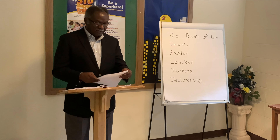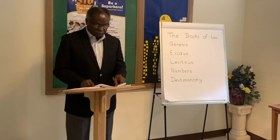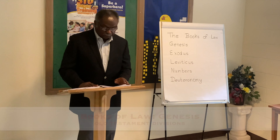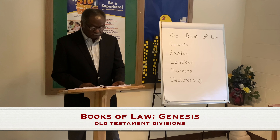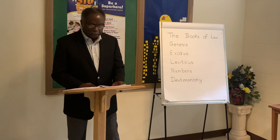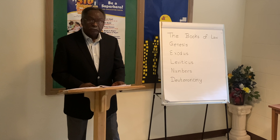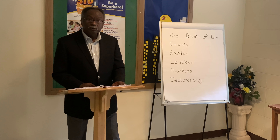Let's look at these five books of law. The first one is Genesis. Genesis is the only book that tells the whole story. It covers creation, Adam and Eve, Noah, the Tower of Babel, Abraham, Ishmael, and Isaac, Esau and Jacob, Joseph, and the move to Egypt. That's Genesis.